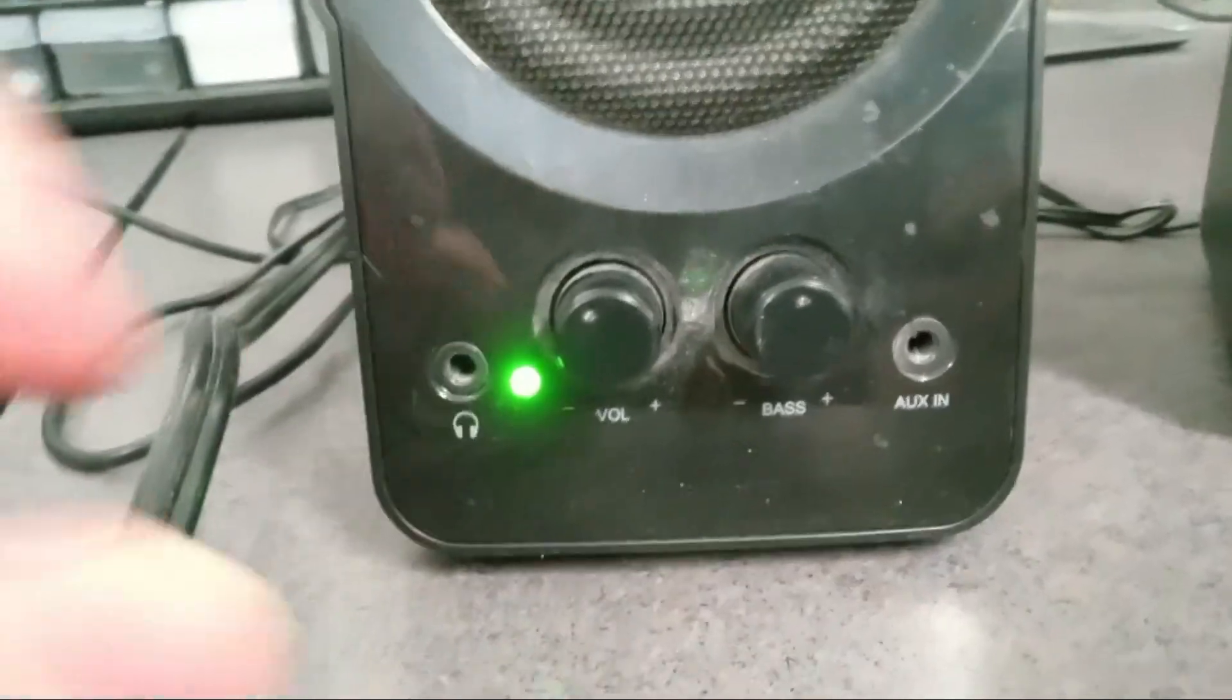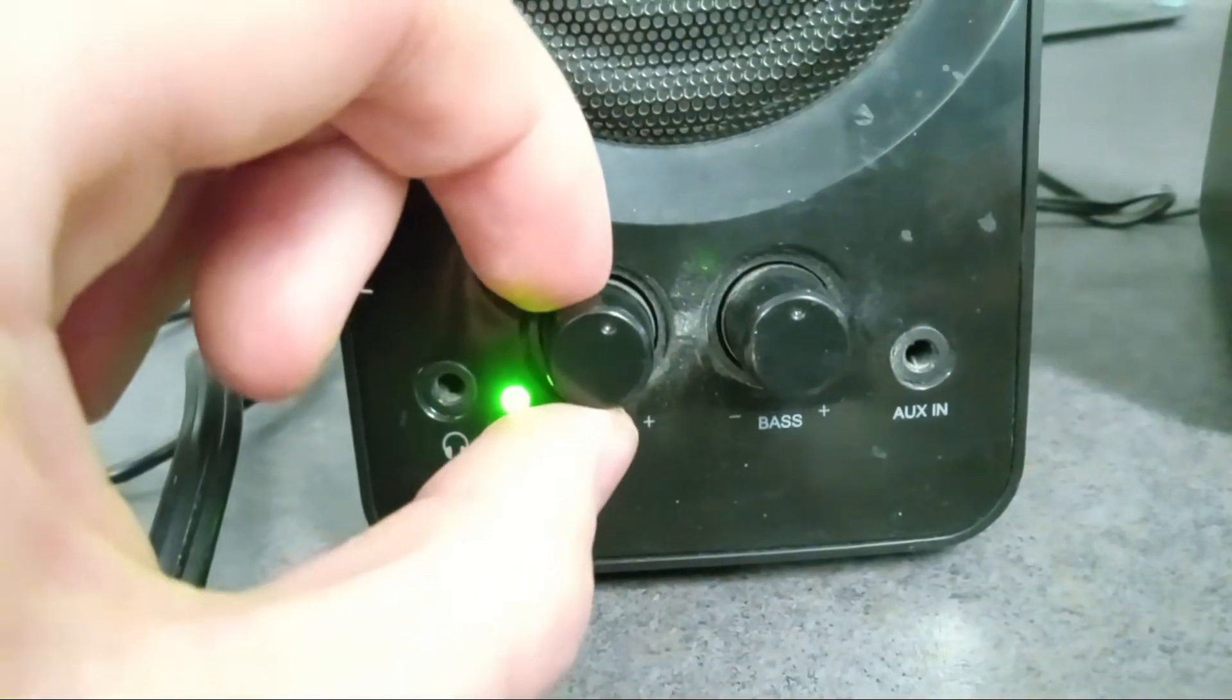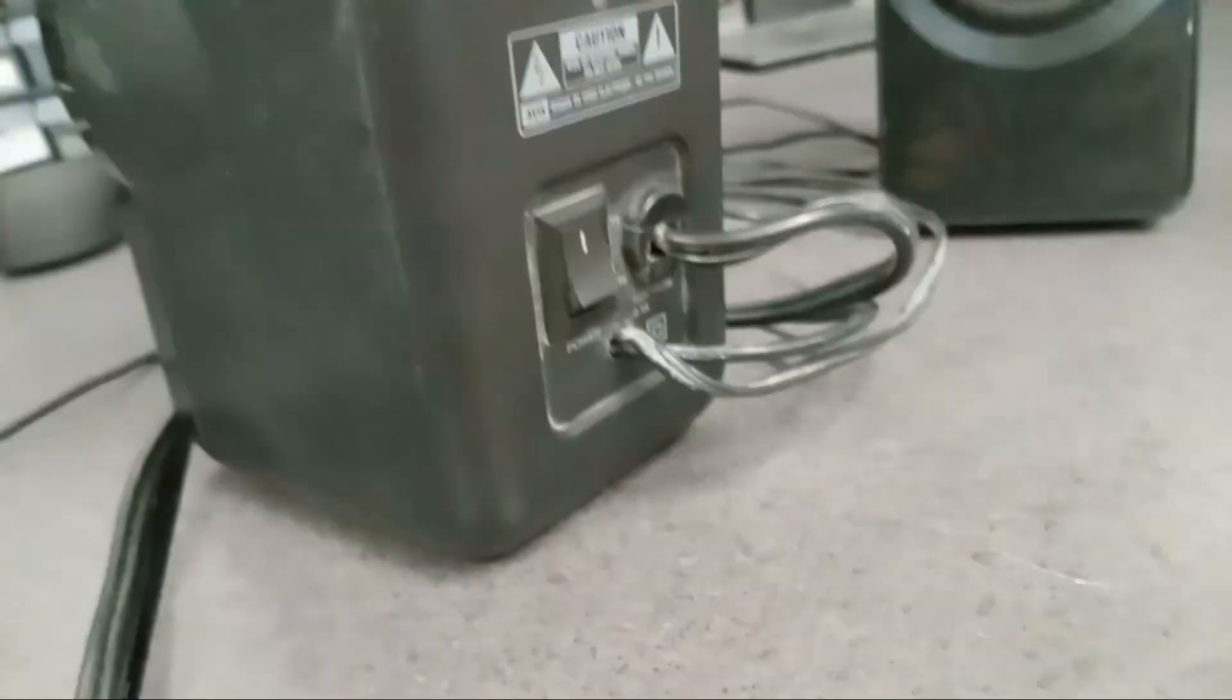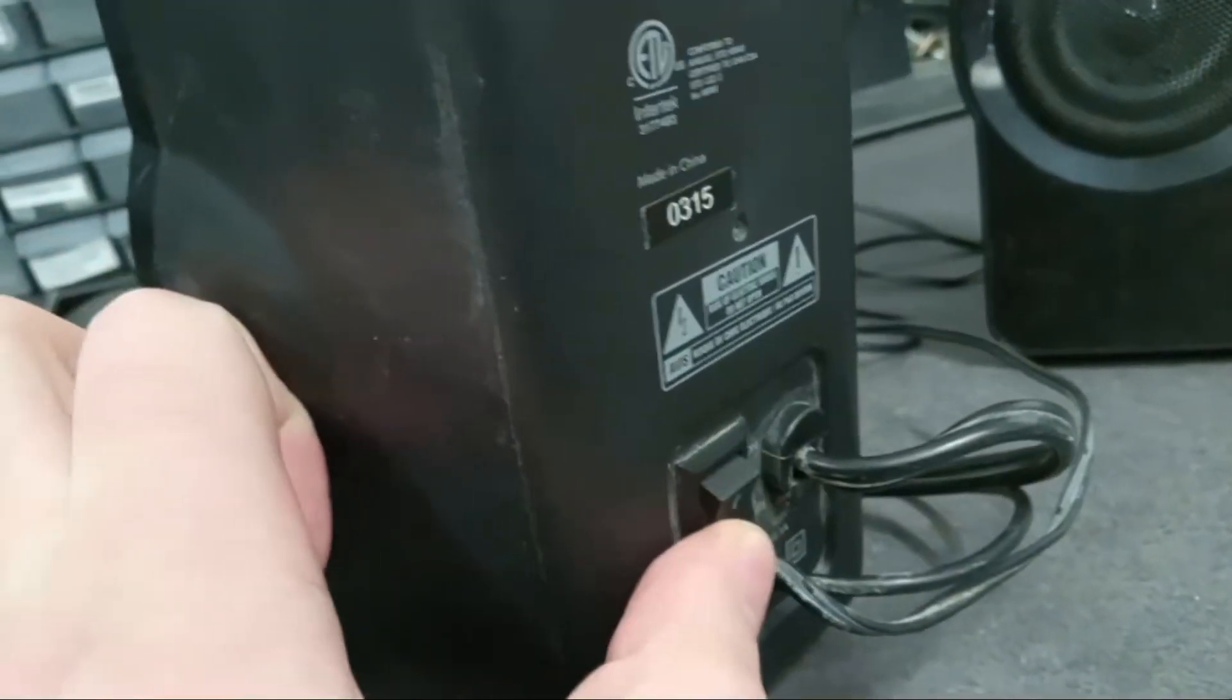On the front panel, there are two knobs, volume and bass. There are also two extra audio jacks for convenience as well. And finally, there was a power switch on the back. But enough with the outside, let's get inside of this thing.